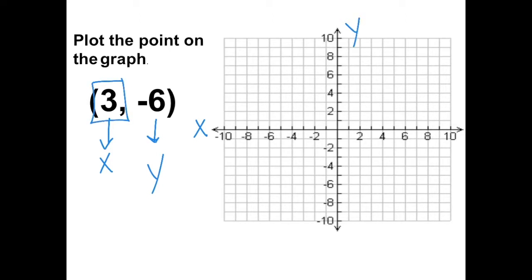So the first number, our x-coordinate, can only be plotted on the x-axis. So when we're looking for positive 3, we're looking for it on the x-axis. Positive 3 on the x-axis is to the right of the origin.